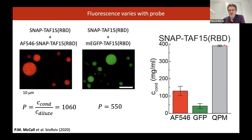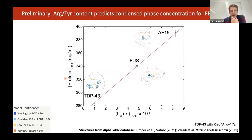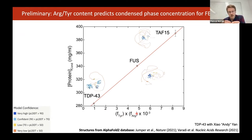This was for the RNA binding domain of protein TA15. There are other members of this family — in particular FUS and TDP43. Using QPI, we measured the concentration of protein inside these droplets. What we saw, interestingly, was that this was a linear function of the fraction of tyrosine residues and fraction of arginine residues. This is consistent with earlier work from Tony Hyman's lab — that these two residue classes interact with one another and drive phase separation of these proteins.